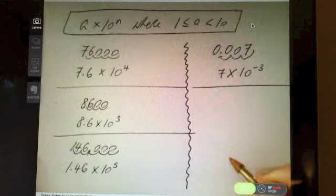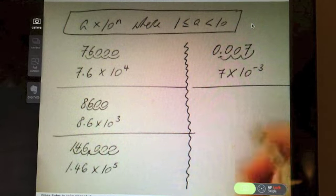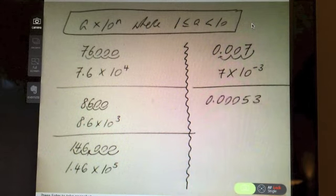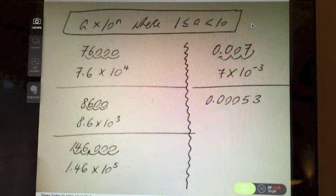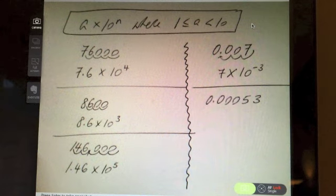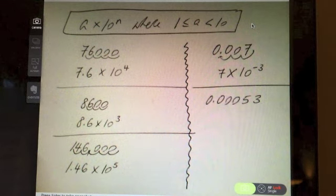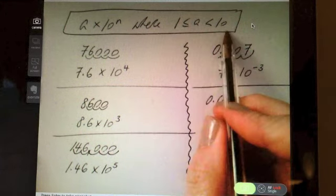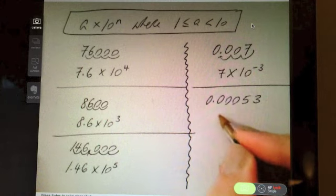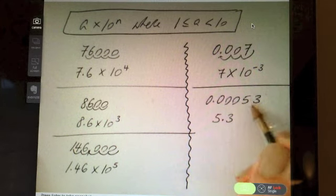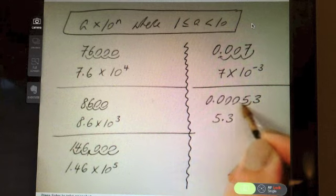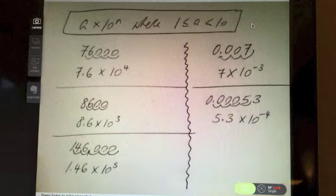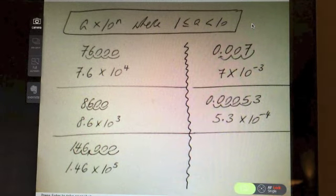Let's try another one, and you can pause the video and see how you get on with it. And then press play. 0.00053. So, where would you need to put the decimal in order to make the number between 1 and 10? That's really important. So, I would have to have it as 5.3. If the decimal's here, it will move 1, 2, 3, 4 to make it smaller. So, 10 to the power of minus 4.